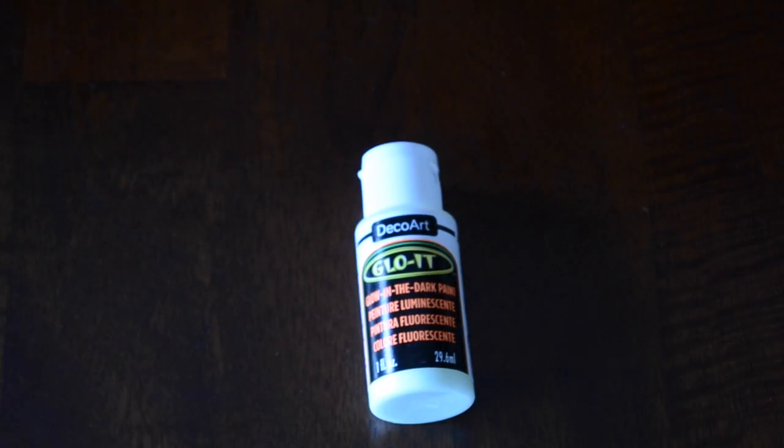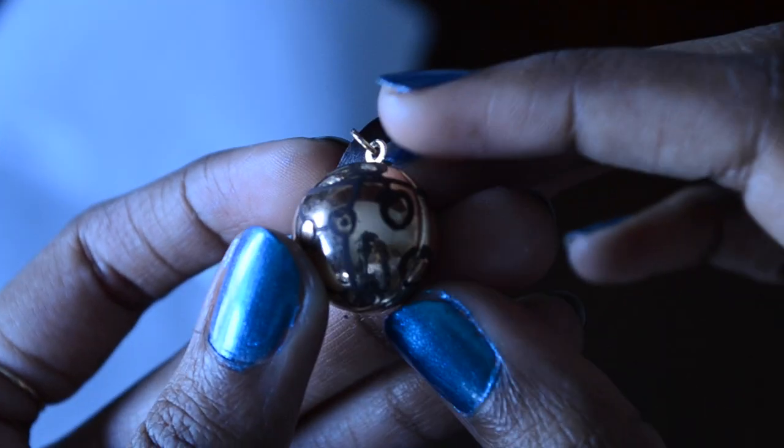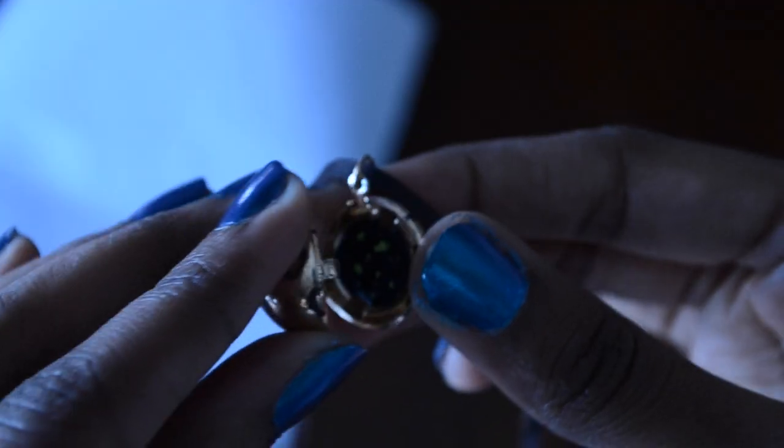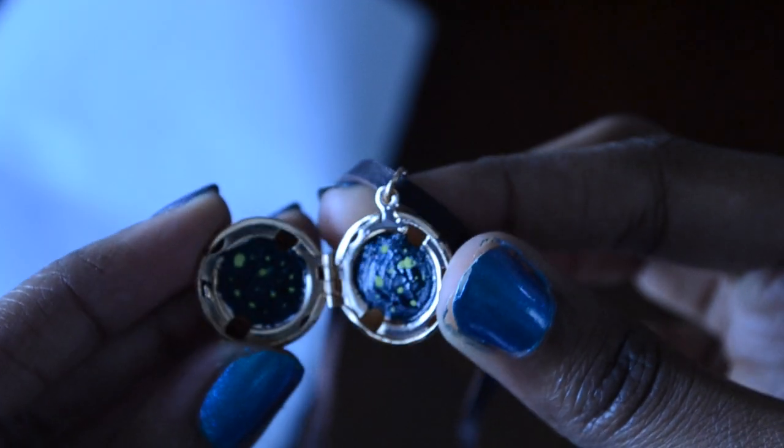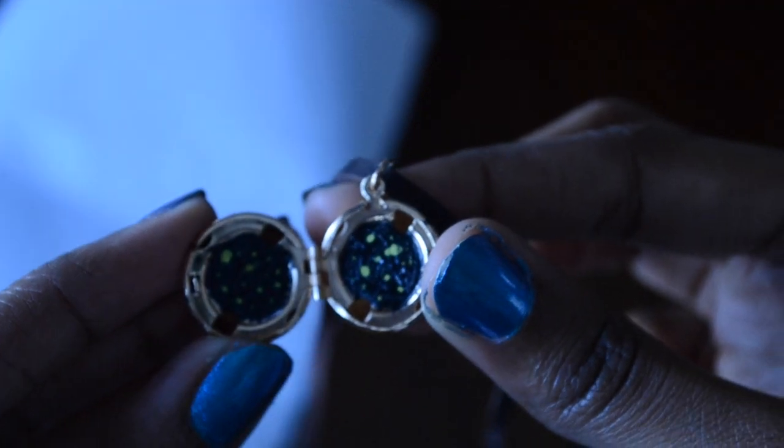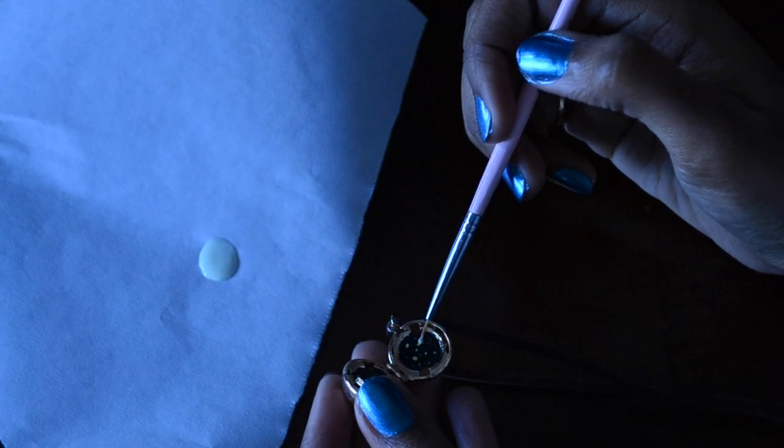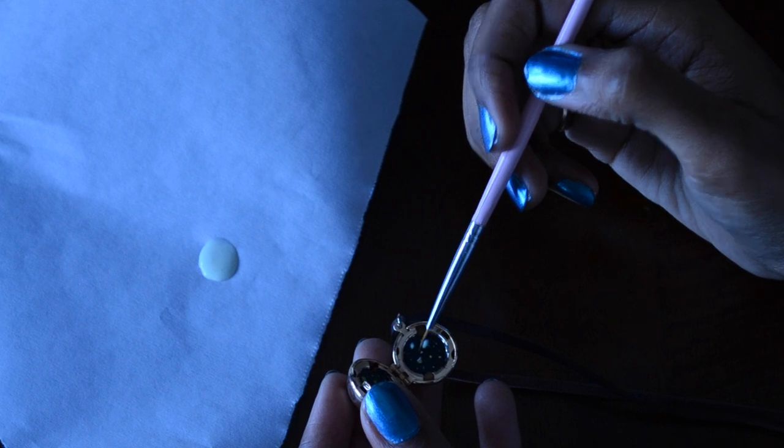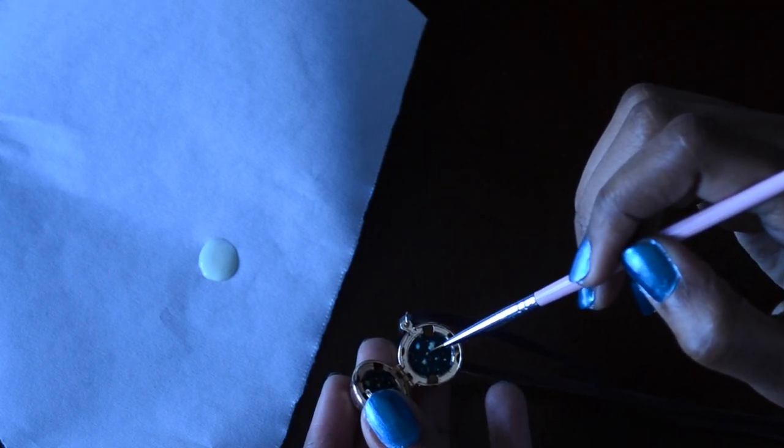Next, take some glow paint and apply it on the outside and inside of your sphere locket. First, use the detail brush and dot on the little green stars and planets that you did on the inside.